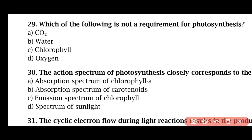Question 30: Which of the following is NOT a requirement for photosynthesis? — Carbon dioxide, water, chlorophyll, or oxygen. The correct answer is option D: oxygen. Oxygen is not a requirement for photosynthesis; it is a product produced by photosynthesis.